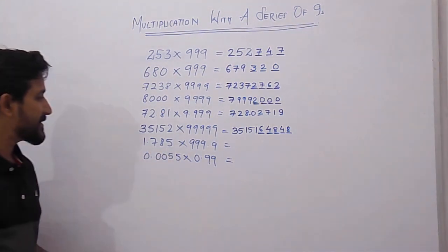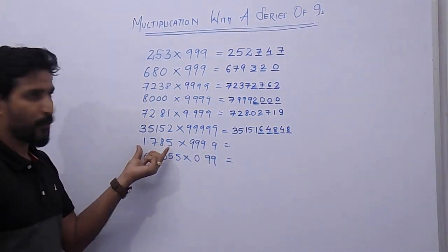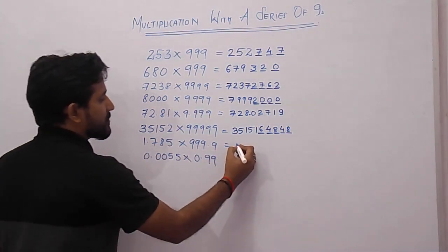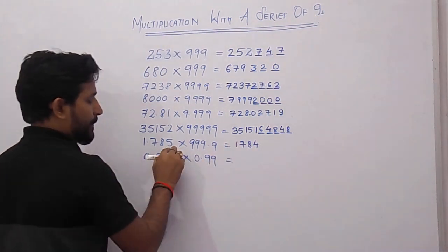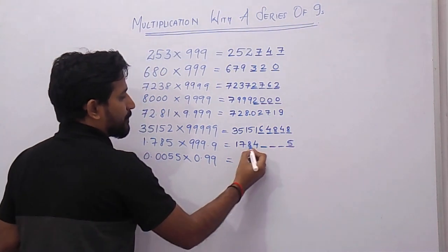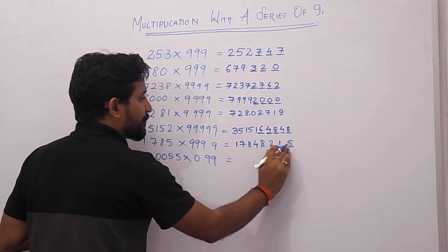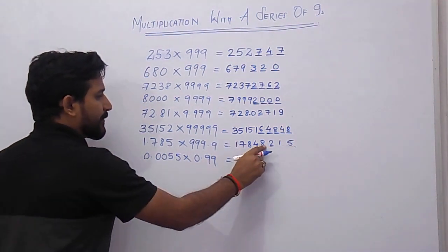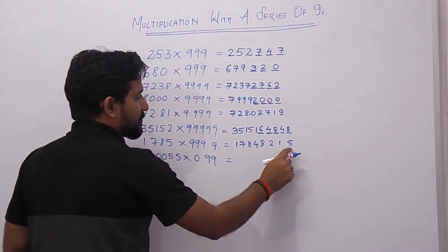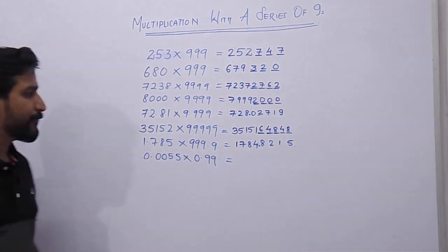Next example: 1.785 × 999.9. Forget about the decimal — it is a 4-digit number, 1785, with four 9's. Decrease by 1 to get 1784. Put 4 spaces and take the 9's complement: 9 minus 4 is 5, 9 minus 8 is 1, 9 minus 7 is 2, 9 minus 1 is 8. Now place the decimal: count 4 places from the rightmost value, giving 1784.8215.